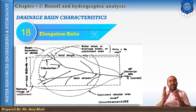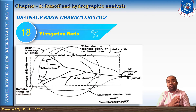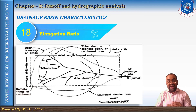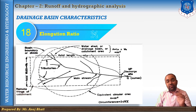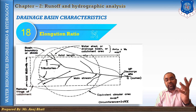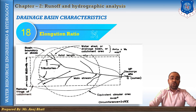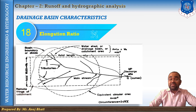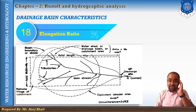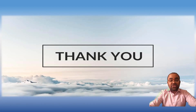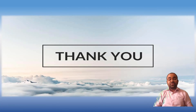The elongation ratio of a catchment area is defined as the diameter of a circle whose area is equal to the basin area, divided by the length of the basin. These are all the drainage basin characteristics. Thank you so much students for your kind attention — we are done with today's lecture. I will see you in the next lecture.